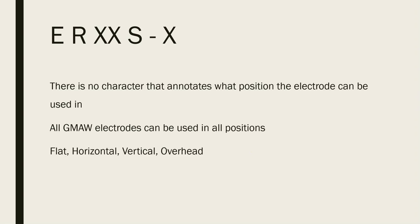One thing I did not talk about is whether there is a number or a letter in this classification that tells you what position this electrode can be used in. That's actually because every single electrode used in GMAW can be used in all positions — flat, horizontal, vertical, and overhead welding. Where some electrodes in SMAW could be used in all positions and some were limited to flat and horizontal, with GMAW you can use them in any position you want. That's kind of the plus side to welding with GMAW.